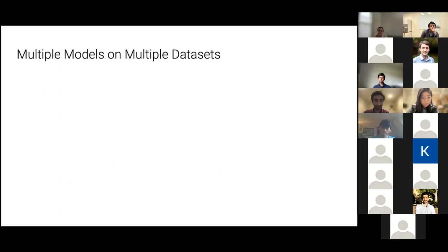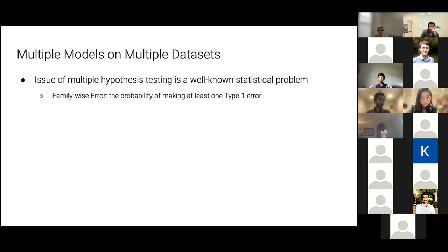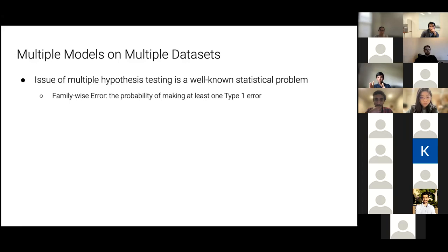The obvious generalization is: what if I have multiple models on multiple datasets? This is not straightforward as just taking different pairs of models and comparing them, because of the family-wise error. Essentially, if you do that, the probability of falsely rejecting the null hypothesis increases, because you're taking the product of different probabilities. At each comparison, there's a certain probability that the result is not true, and since you multiply the different p-values, the net p-value actually increases. So you have to use different statistical tests for this.